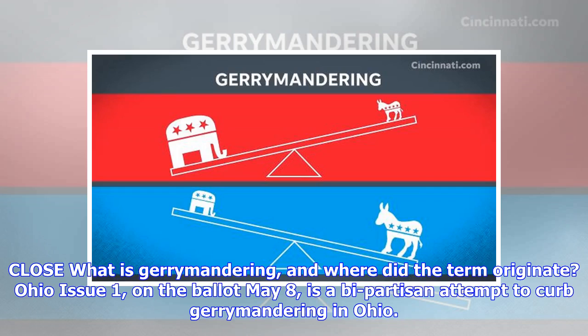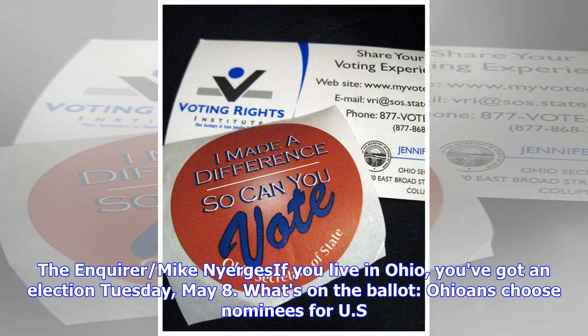What is gerrymandering and where did the term originate? Ohio Issue 1 on the ballot May 8th is a bipartisan attempt to curb gerrymandering in Ohio. If you live in Ohio, you've got an election Tuesday, May 8th.